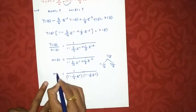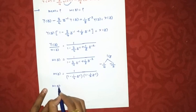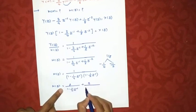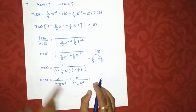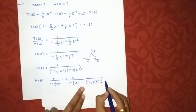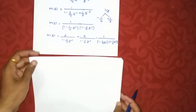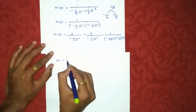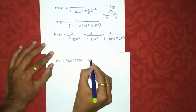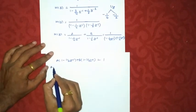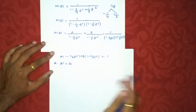Applying partial fraction expansion: H(z) = A/(1 − (1/4)z⁻¹) + B/(1 − (1/2)z⁻¹). Cross-multiplying gives A·(1 − (1/2)z⁻¹) + B·(1 − (1/4)z⁻¹) = 1. To find A, we set z⁻¹ = 4.